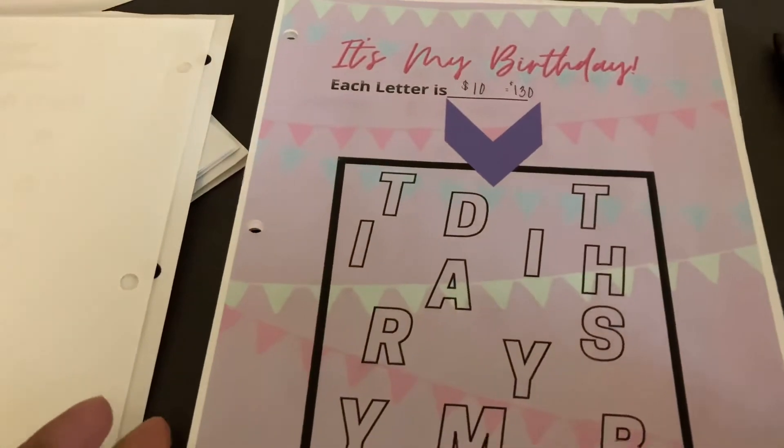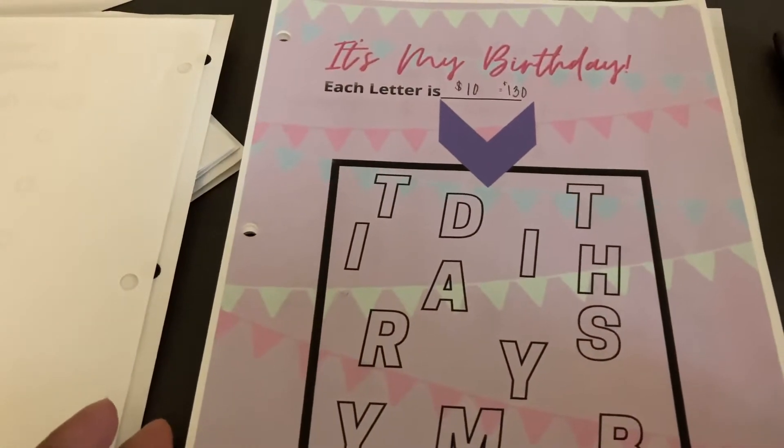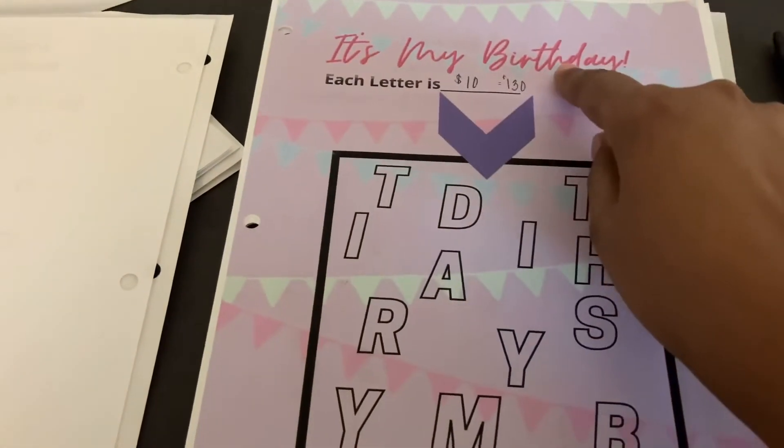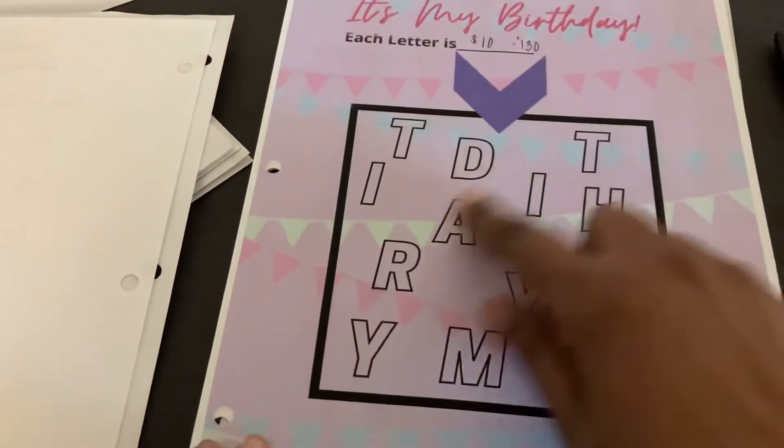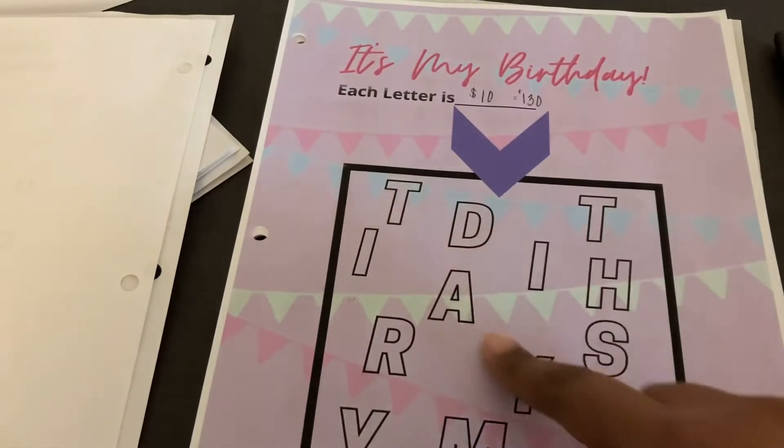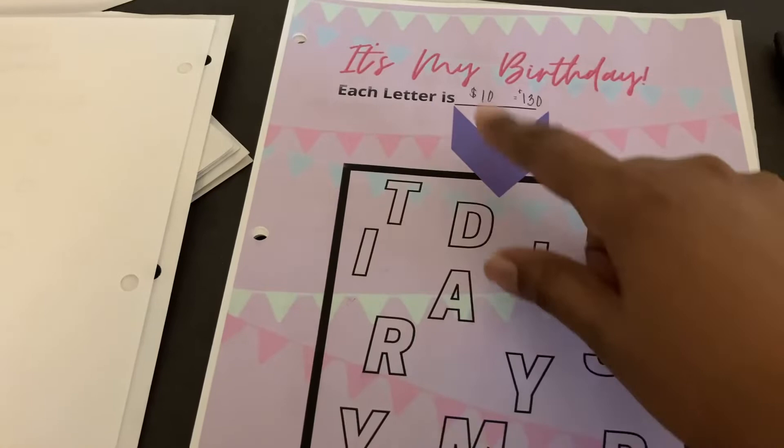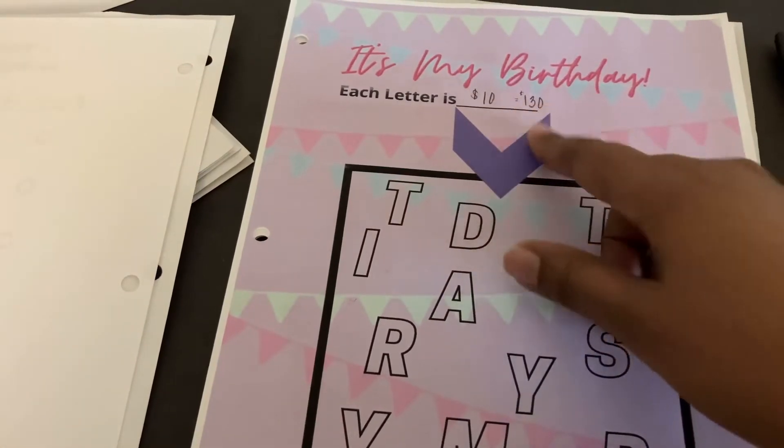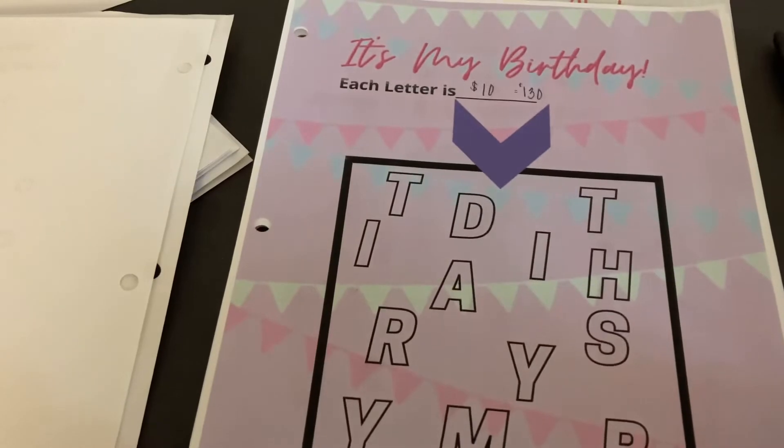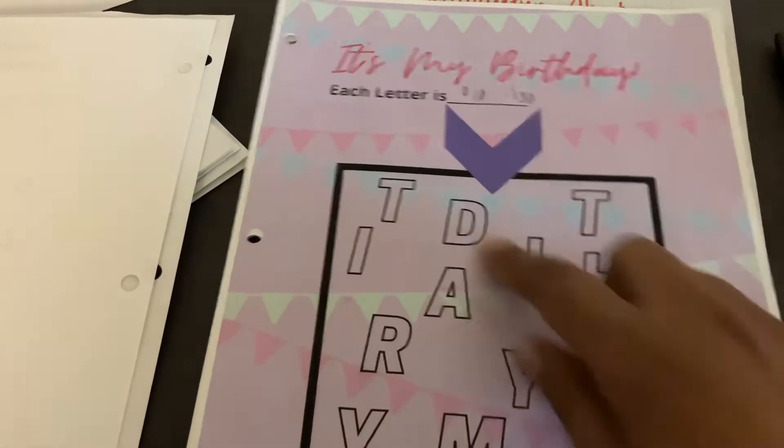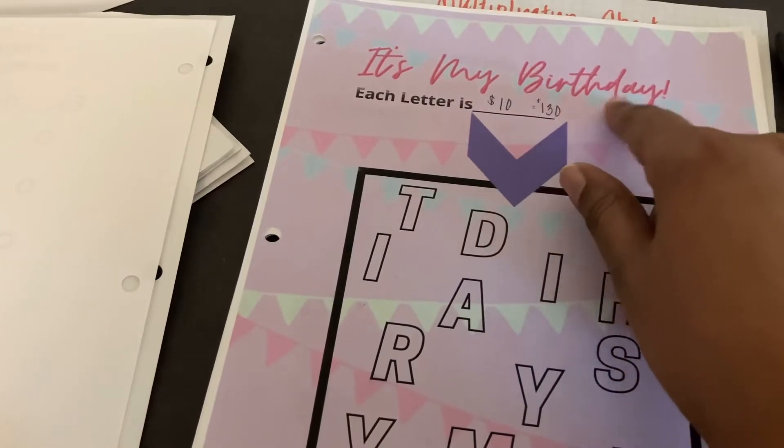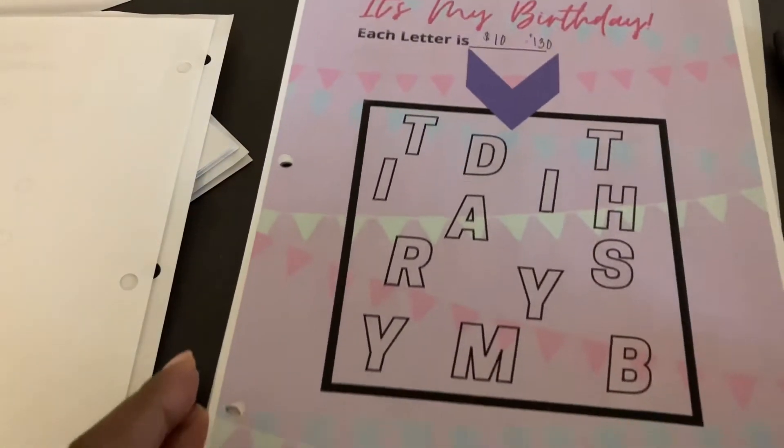Now this one I created as well. It's called It's My Birthday, and basically all the letters in the title are here. Each letter, once you color it in, each of the letters are worth $10, bringing it to a total of $130. So there's a total of 13 letters.